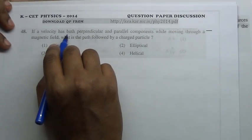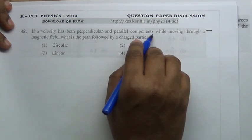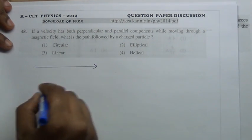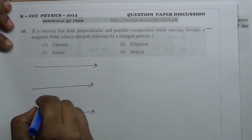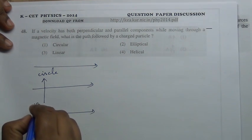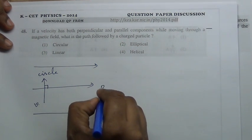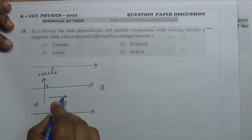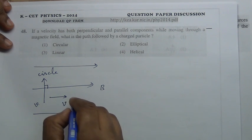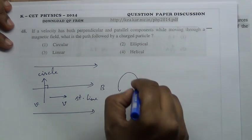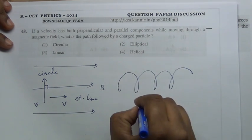If a charged particle's velocity has both perpendicular and parallel components while moving through a uniform magnetic field, the perpendicular component causes circular motion while the parallel component is unaffected by the field and gives straight-line motion. The combination of circular and linear motion results in a helical path.